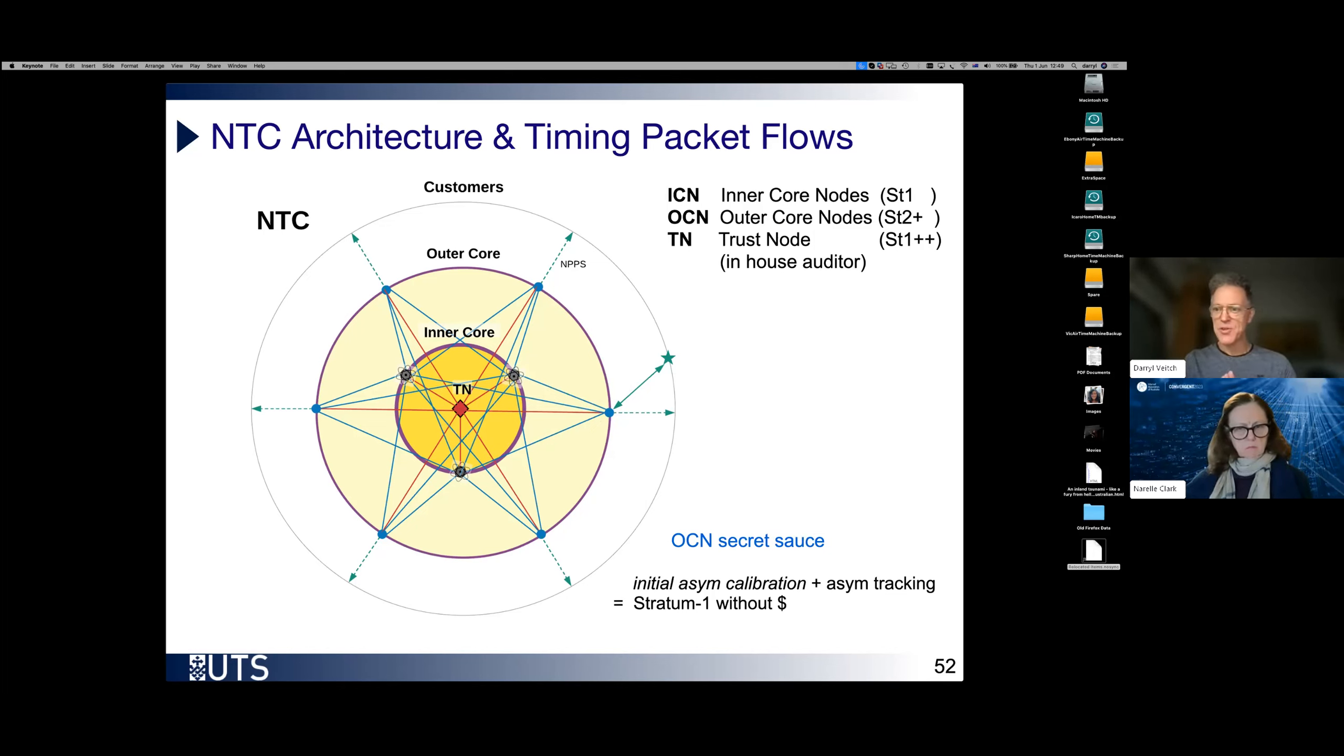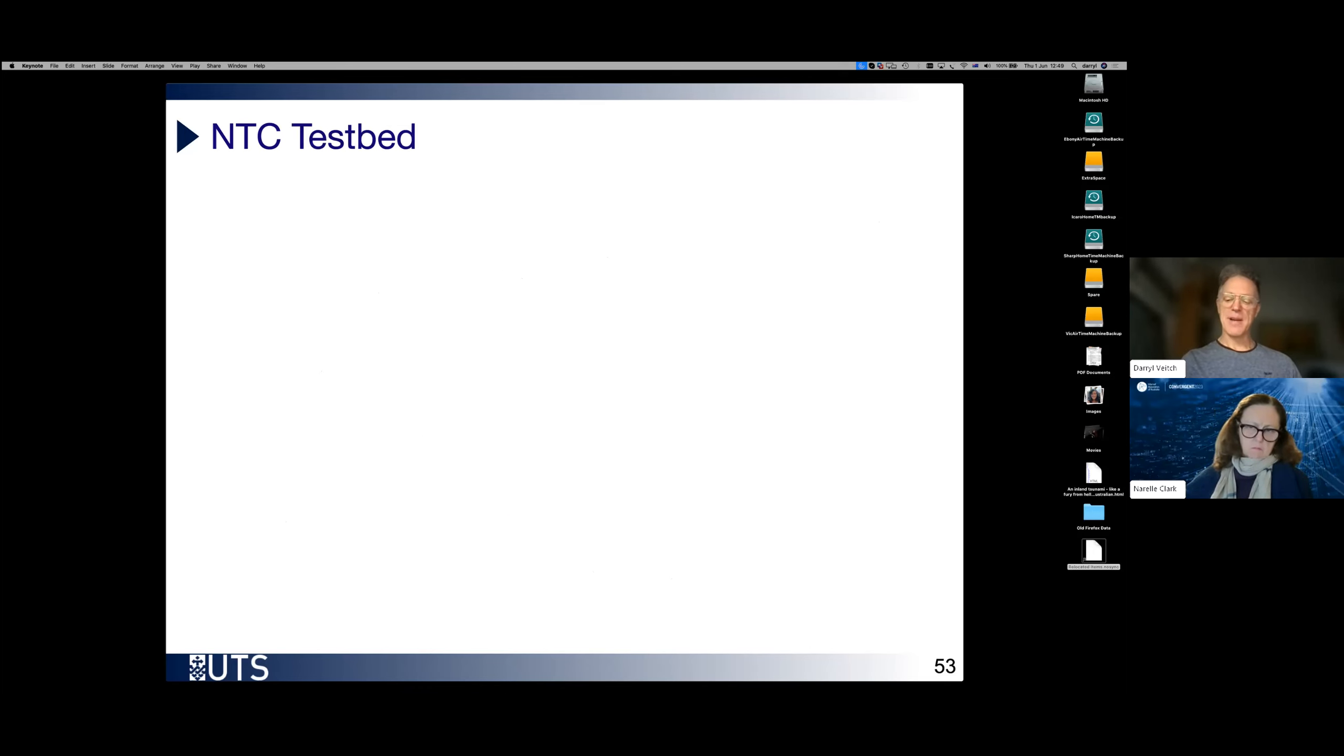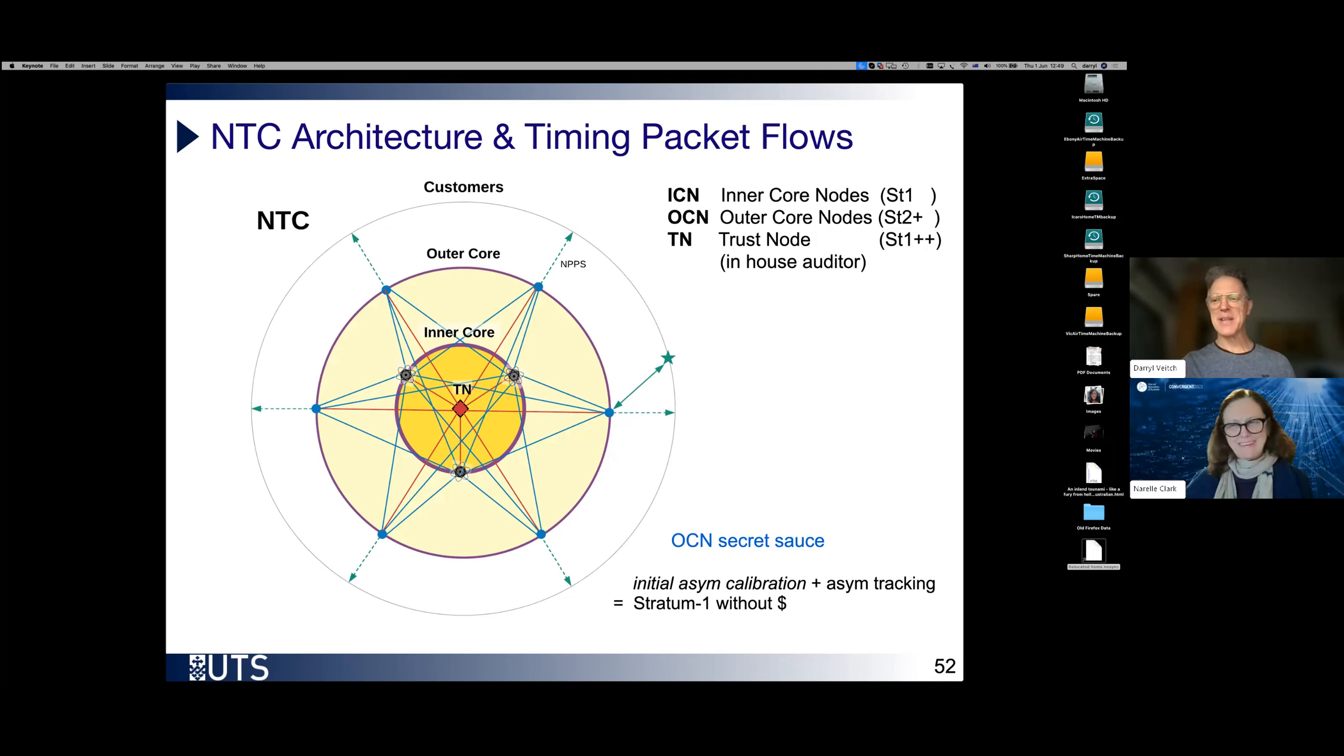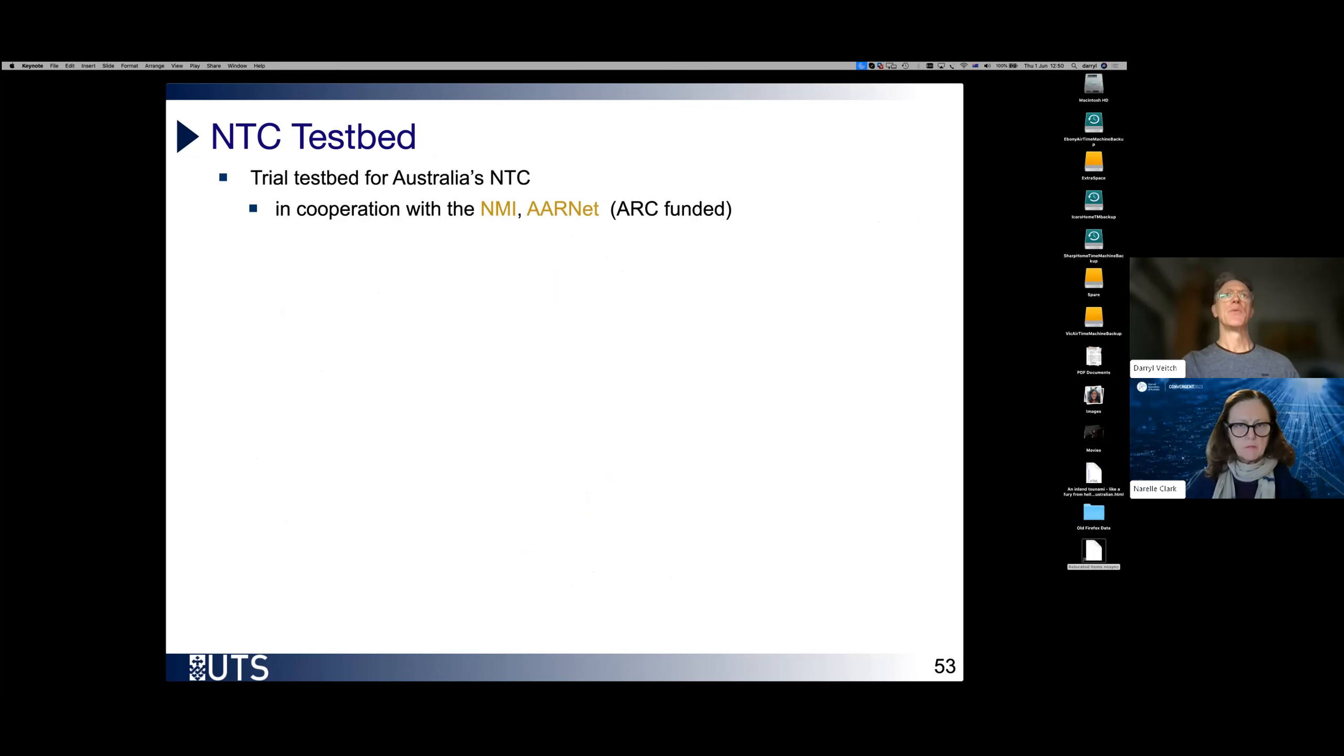And then these stratum two OCNs become like stratum ones, but without having to pay for the cost of it. So this is part of the secret sauce, which will make this entire system behave like an expansion of the inner core, but without the cost. We have a test bed running this. It consists of four OCNs in Sydney, Melbourne, Brisbane and Perth. Inner core nodes, which are the stratum one nodes from the National Measurement Institute. They are white listed. They're not open to the public, but they are open to us. And why are they willing to let us use it? Well, first and foremost, because we just use them as they are. We're not asking them to run potentially dangerous software on their boxes.